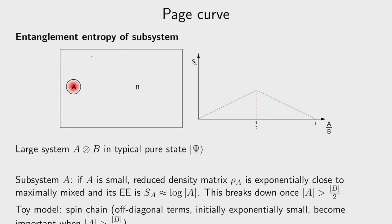For a bipartite system in a pure state, S_A = S_B, so if A becomes larger than B, B plays the role of the small system. Page conjectured that if you plot the entanglement entropy of subsystem A as a function of its size, it goes up to the midpoint and then back down — this is called the Page curve.